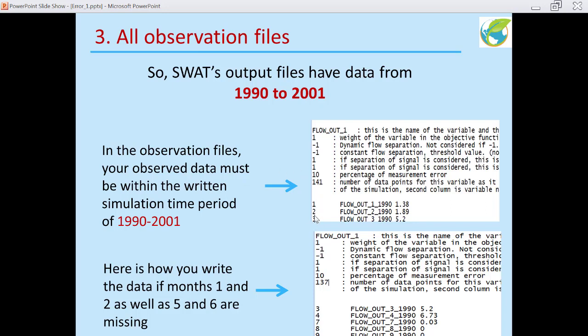So in the observation file, here you have month number. Our simulation here is monthly, so these are month numbers. If it was daily, this would be day numbers. If it was year, it would be year numbers. Starting from beginning, one would be January of 1990, February of 1990, March of 1990.